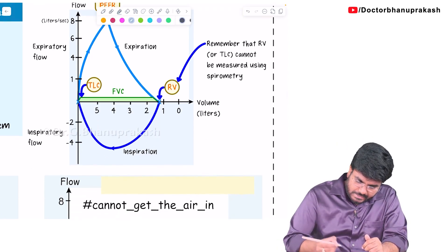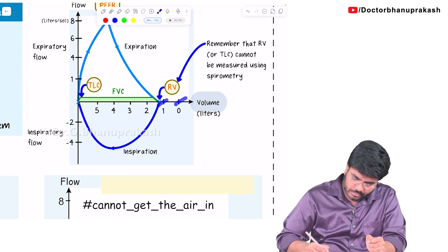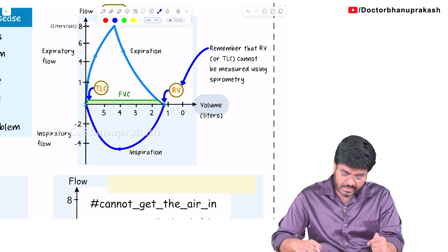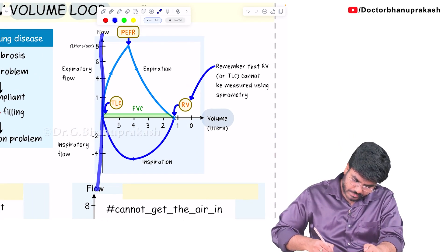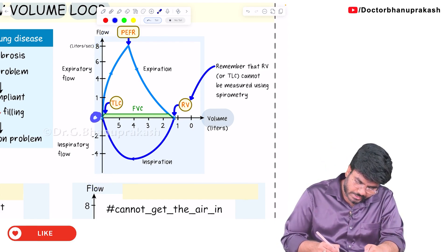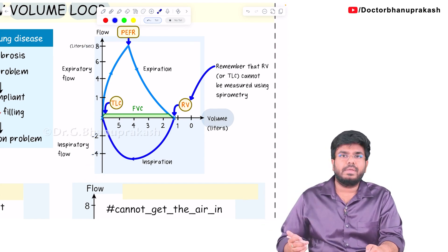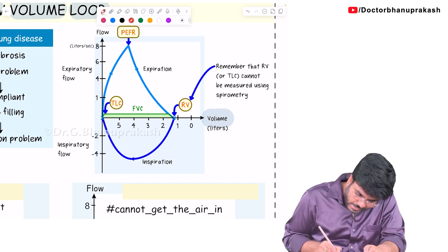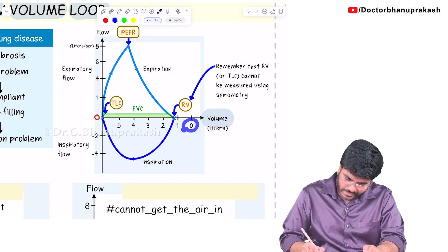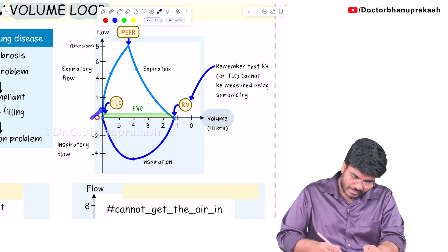On the x-axis, what is given? The volume changes — how the volume is changing from 0 mL, 1, 2, 3, 4, 5, 6, 7, 8, something like that. The volume is shown on the x-axis. On the y-axis, we are talking about the flow changes, meaning the velocity changes, starting from 0 liters, 1, 2, 4, 6, 8, 10, something like that. Don't be confused about why there are two zeros — one is regarding the volume and the other is regarding the velocity.